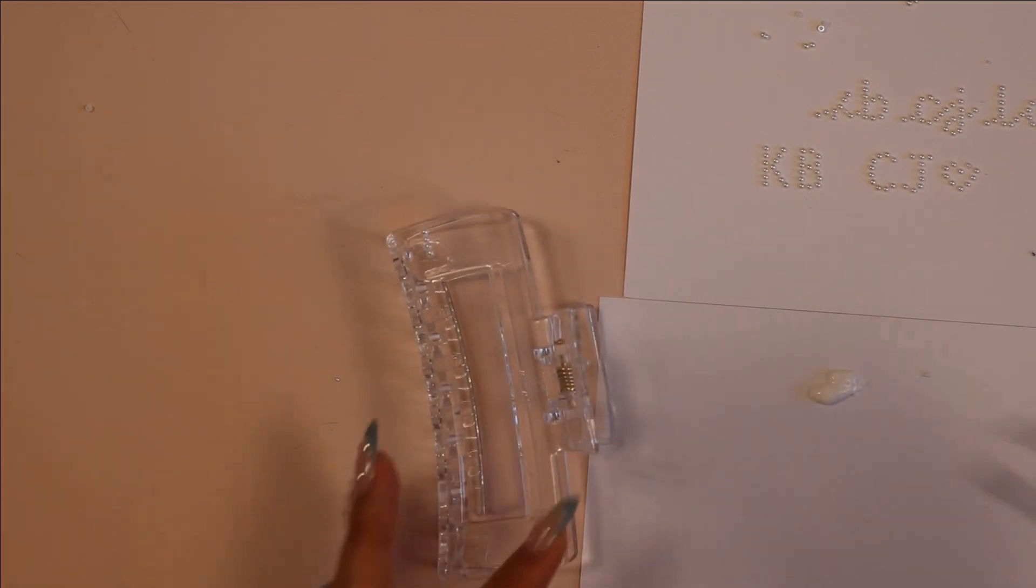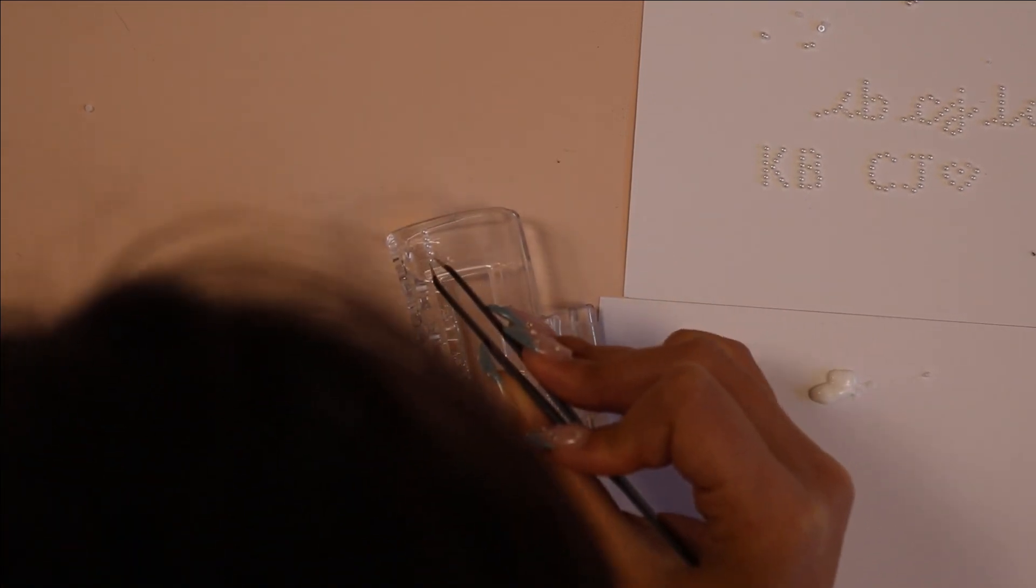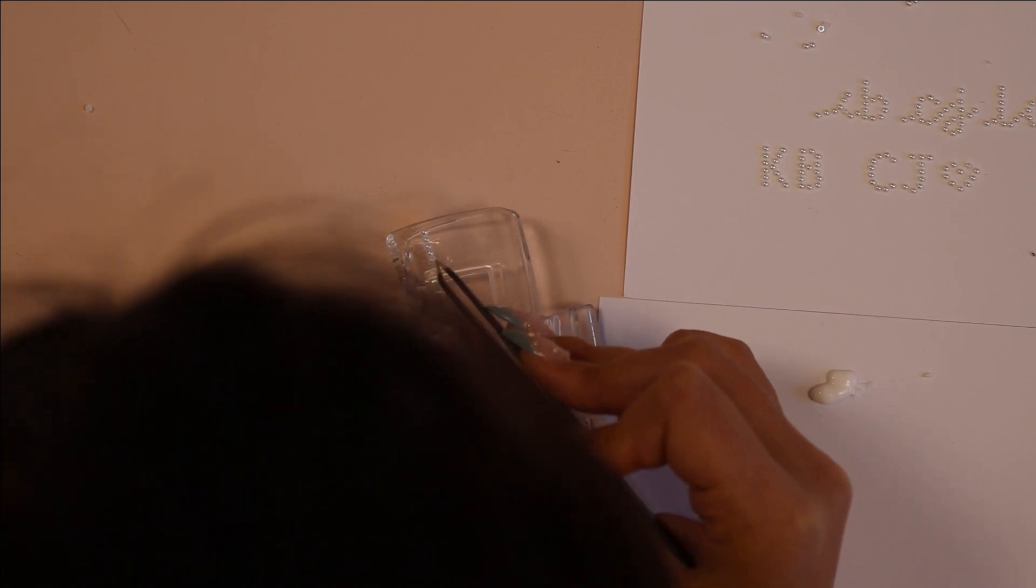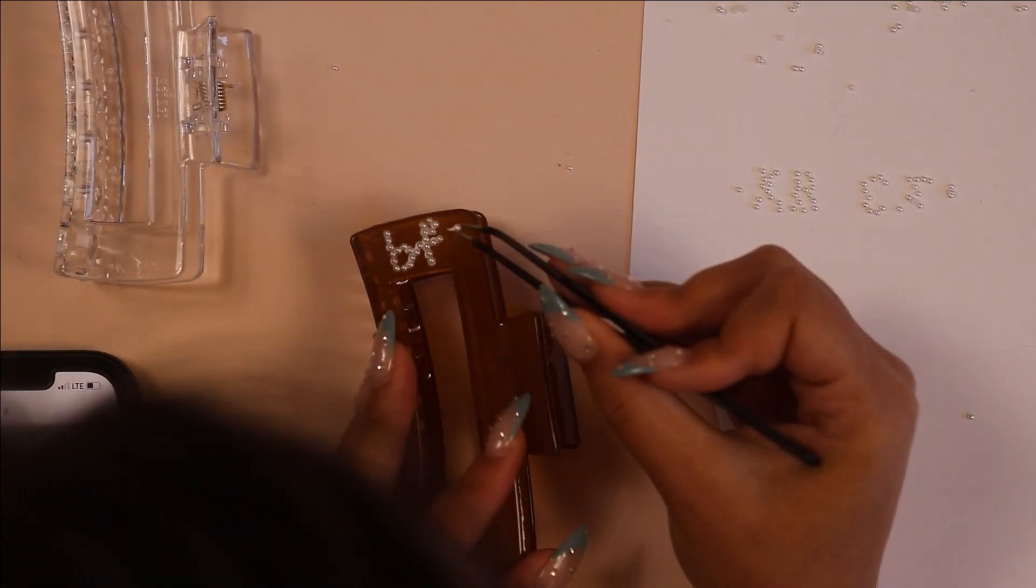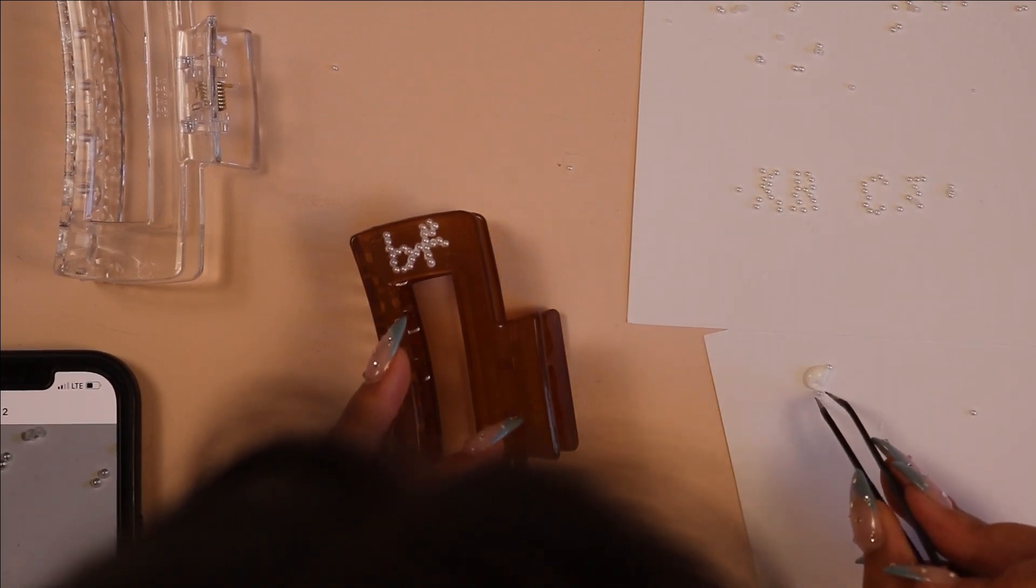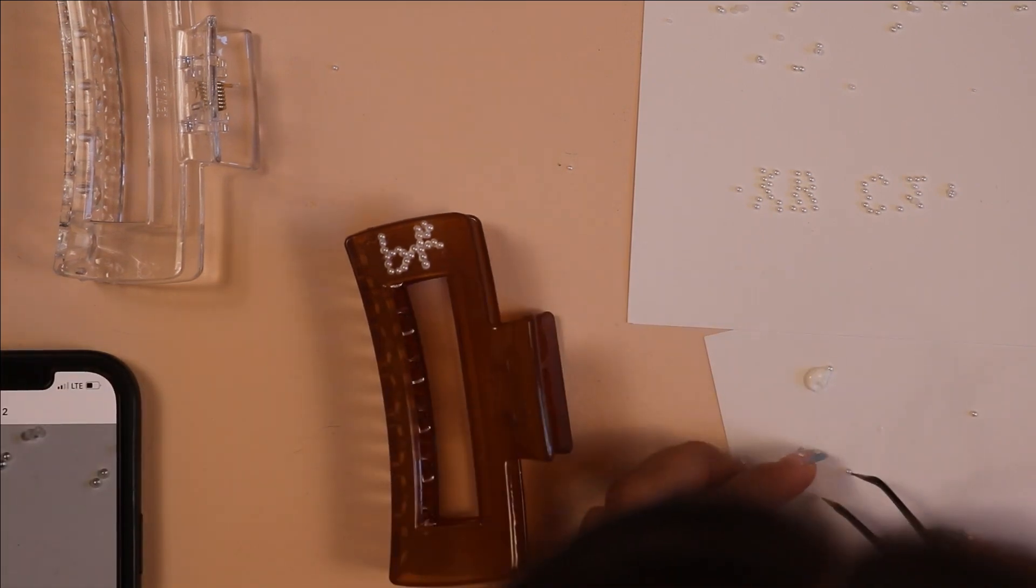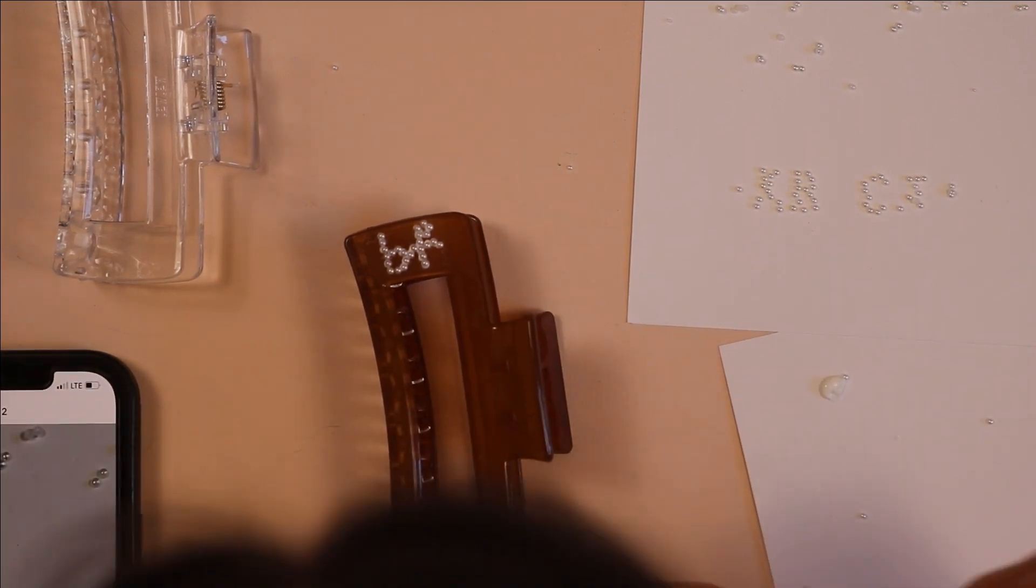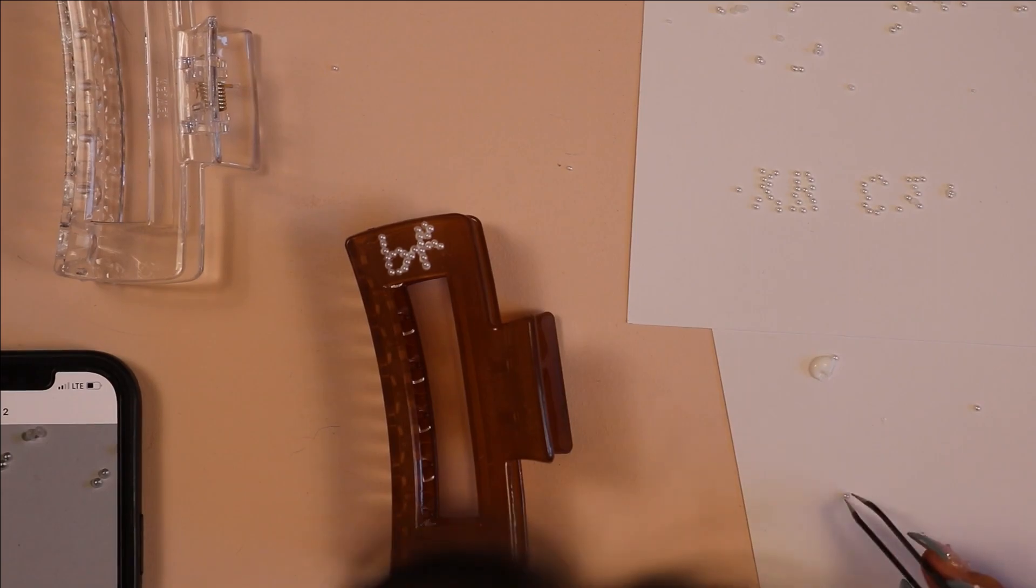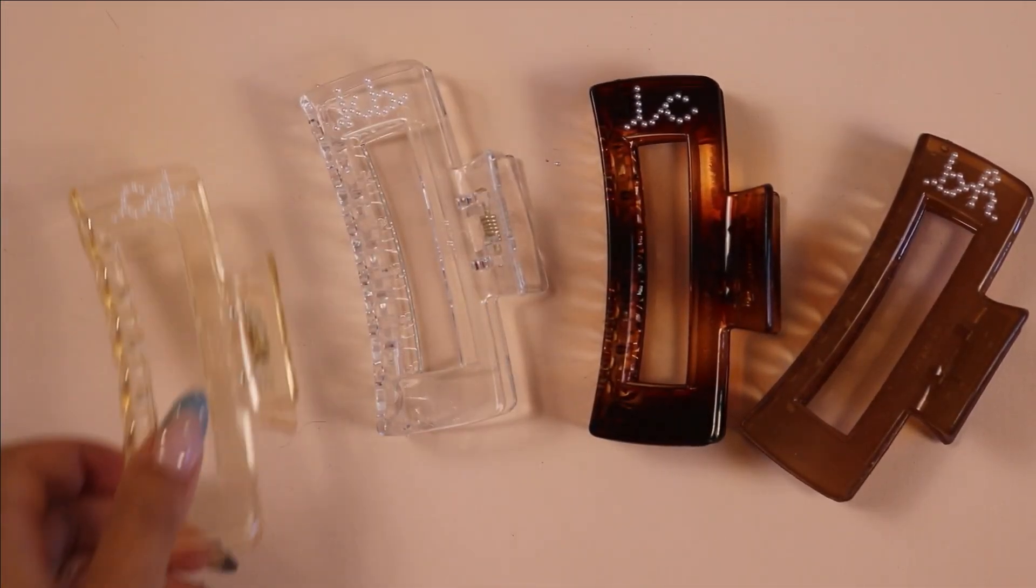I'm grabbing a pearl with my tweezers, dipping it ever so slightly into the gem tack, and then just placing it on the claw clip. It doesn't cure right away, so you do have a good amount of time to keep moving the pearls around before it finally dries. The glue will dry clear. I decided to do matching lowercase cursive initials for all of my girlfriends. That's what I gave to my friends for Christmas, although I did step on mine already and break it, so don't do that.